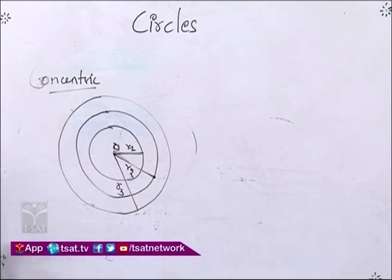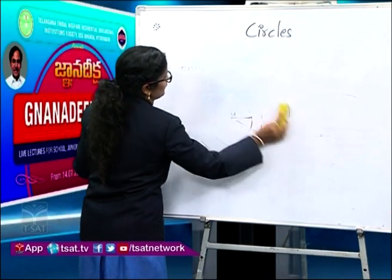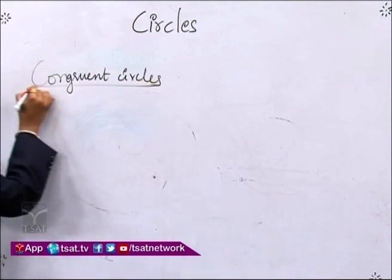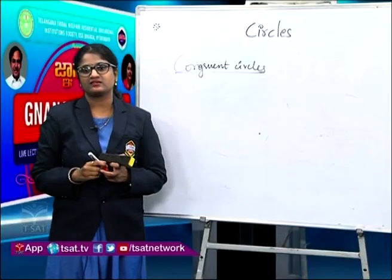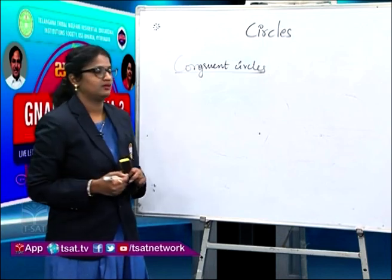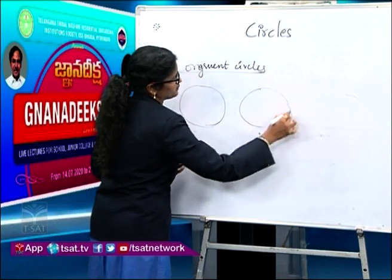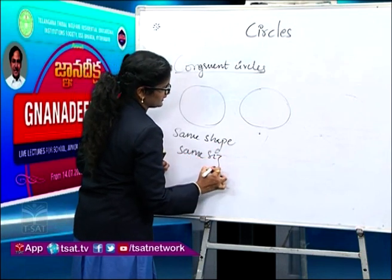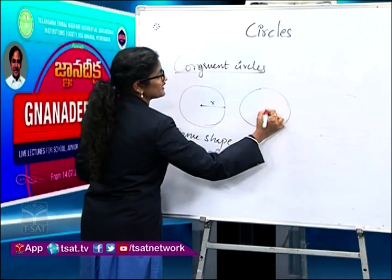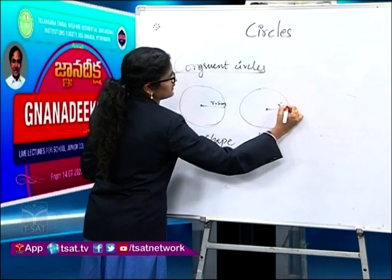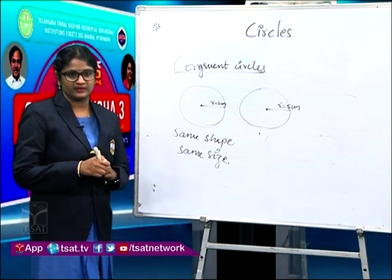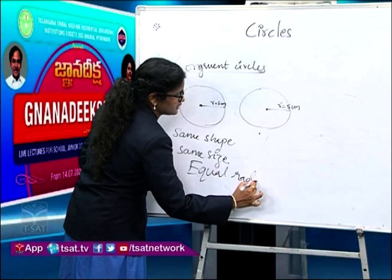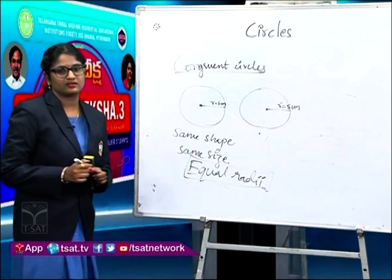We will also see what are congruent circles. We know that objects with the same shape and same size are congruent. Circles always have the same shape, but for the same size, the radius must be equal. If one circle has radius 5 cm and another also has radius 5 cm, they are congruent. In other words, two circles are congruent if they have equal radii.